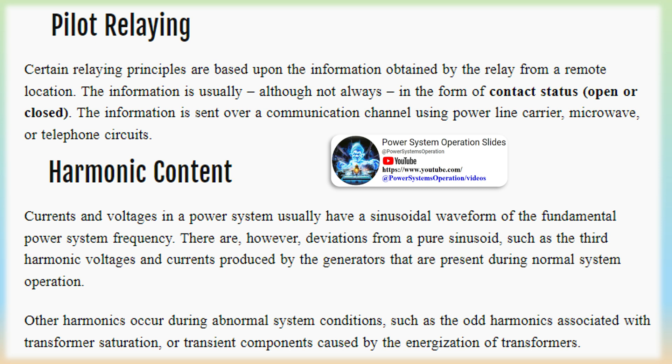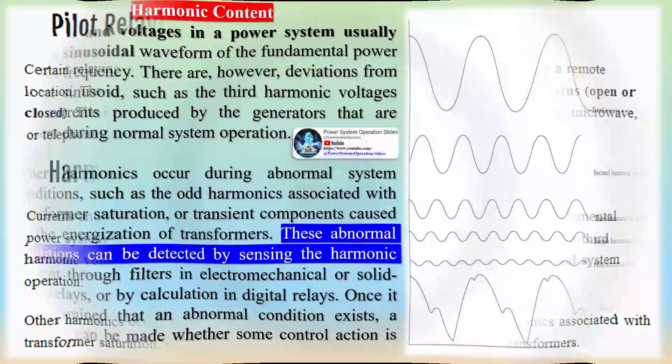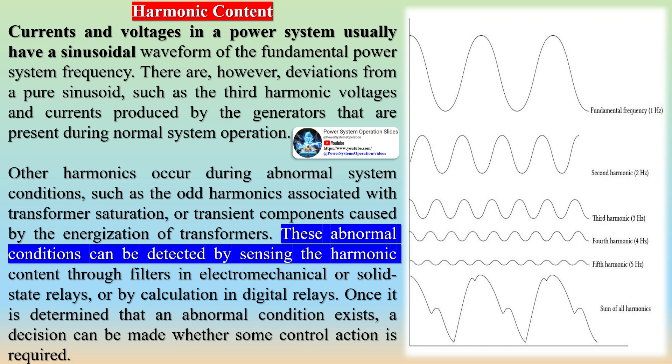Other harmonics occur during abnormal system conditions, such as the odd harmonics associated with transformer saturation, or transient components caused by the energization of transformers.